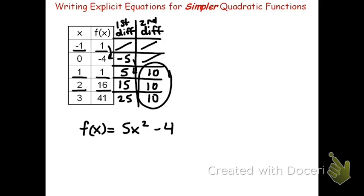There's actually an easier way to find the constant. If you're given the x value of 0, right here, the negative 4, which is the f of 0, tells me what the constant will be for the quadratic function. If you're given this, it's much easier just to take half the second difference, find your x squared value, then look where x is 0 to find your constant.